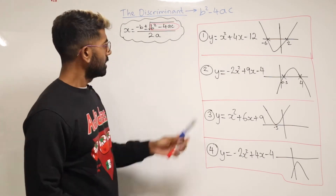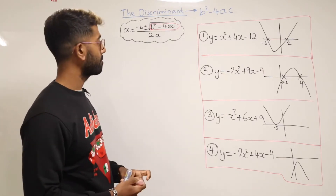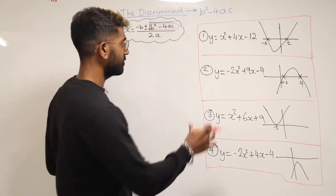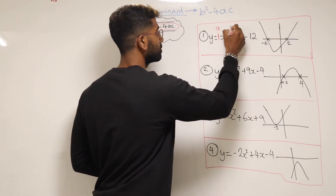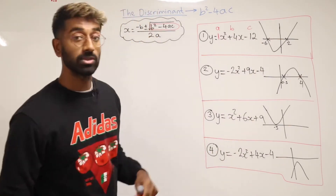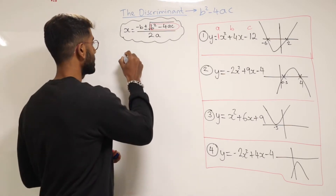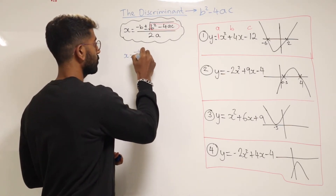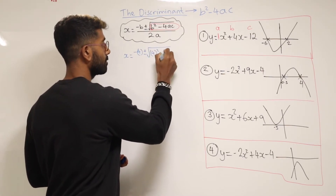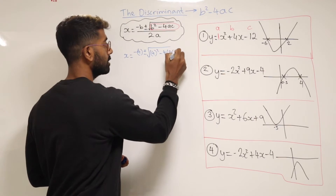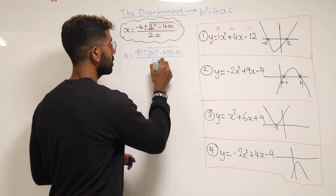Looking at the first one, I'm going to start filling out the quadratic formula as if we were going to solve it. So if this quadratic was equal to 0, a would be equal to 1, b would be equal to 4, and c would be equal to minus 12. So filling out the quadratic formula, we'd have x is equal to minus 4 plus or minus the square root of 4 squared minus 4 lots of 1 times by minus 12, all over 2 lots of 1.